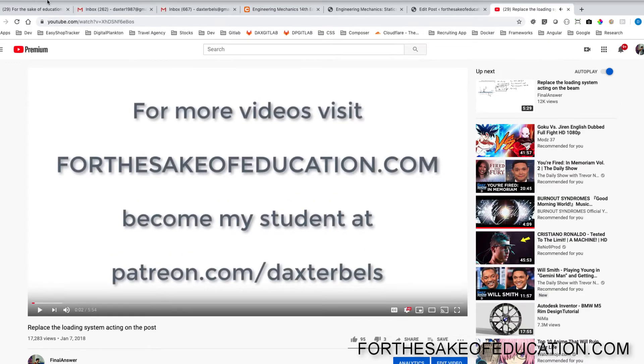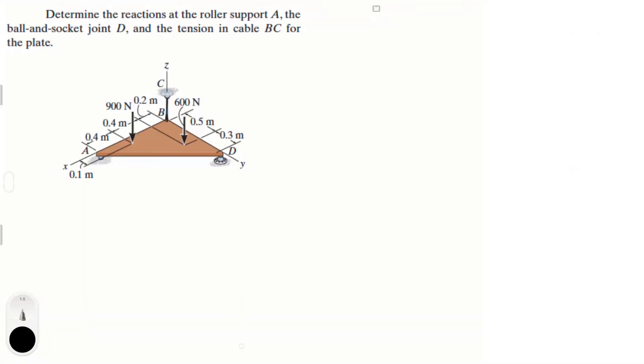Alright guys, let's do this problem that says determine the reactions at the roller support A, the ball and socket joint at D, and the tension in the cable BC for the plate. Looking at this problem you can already tell that you have a reaction going up at D and a reaction going up at A.